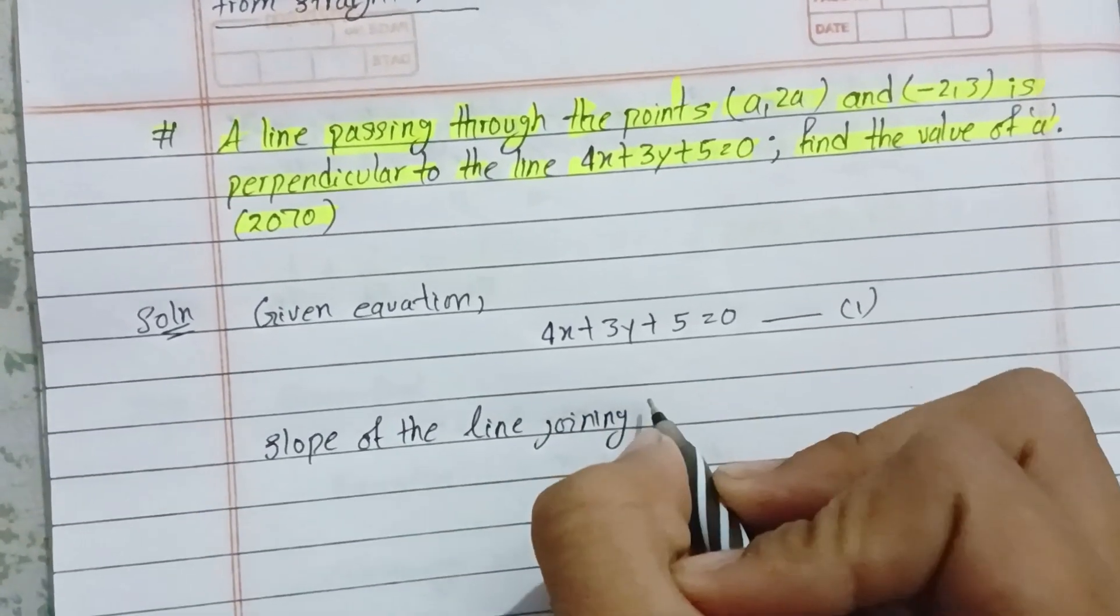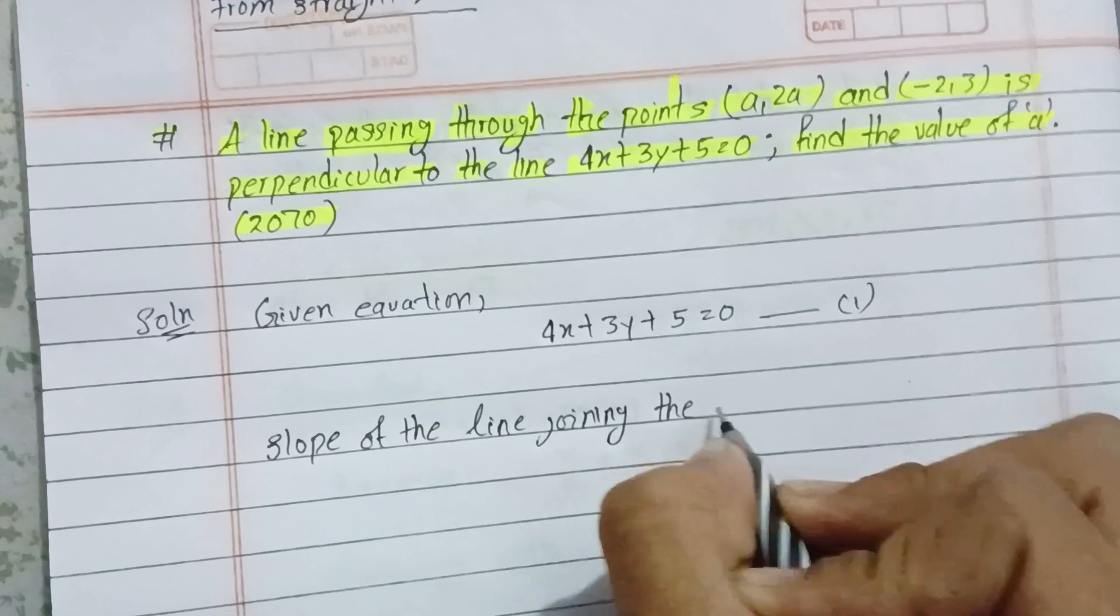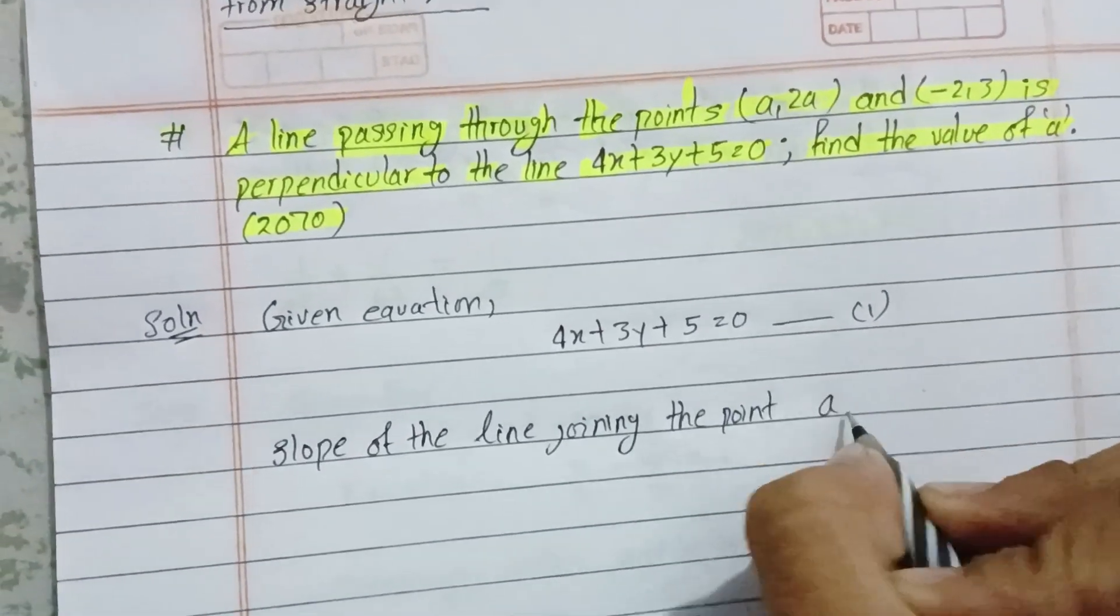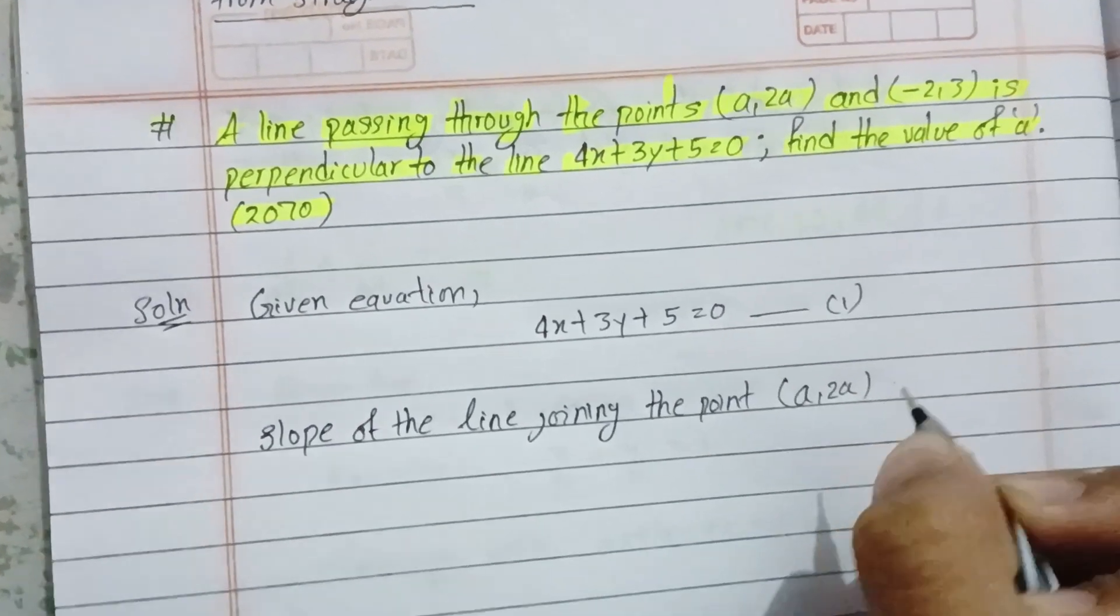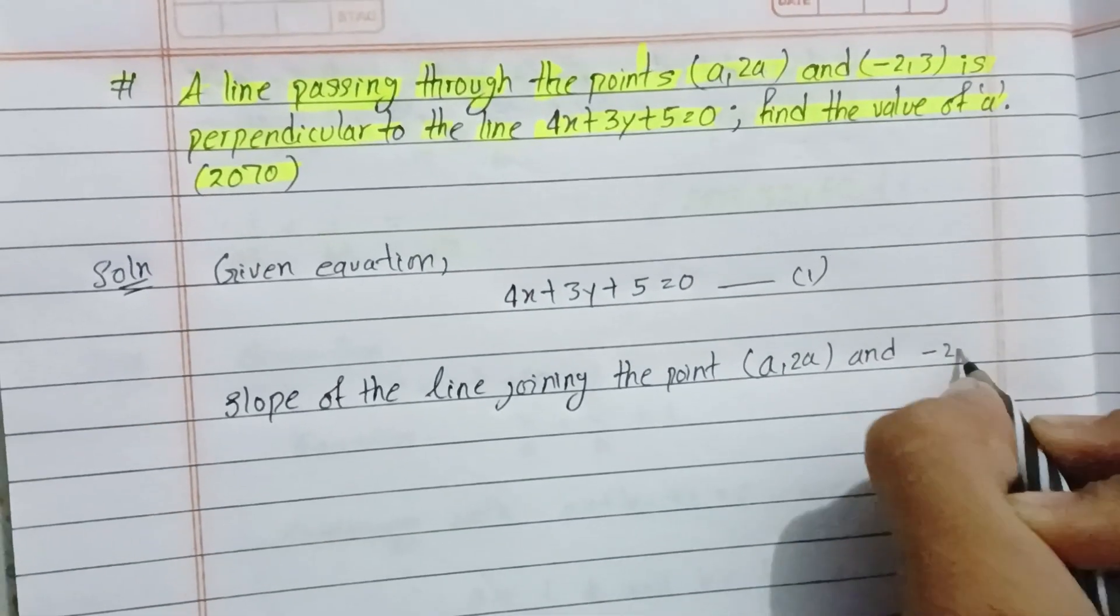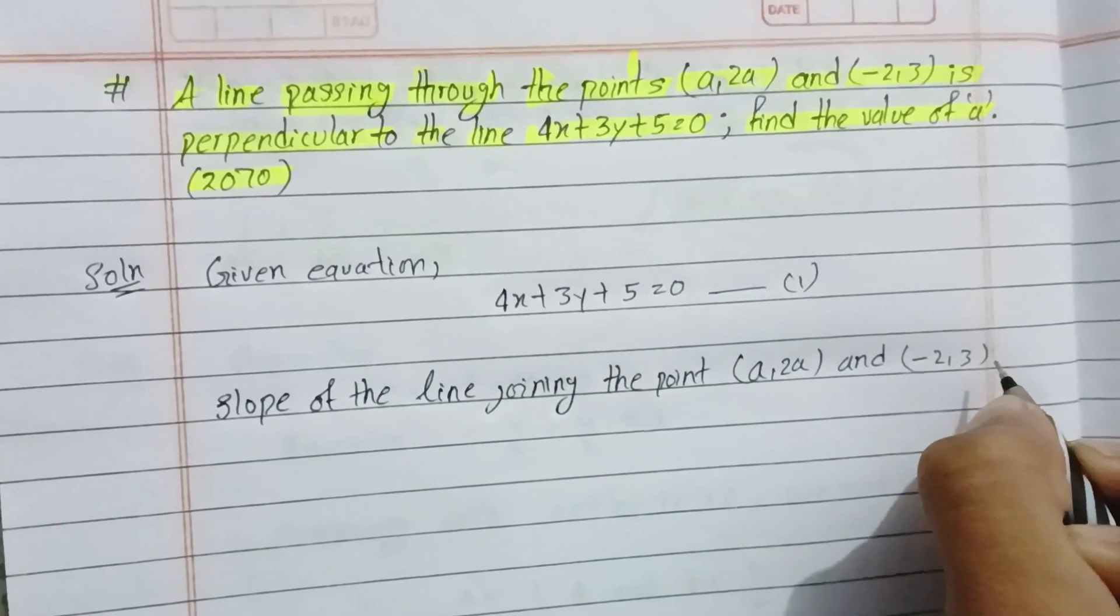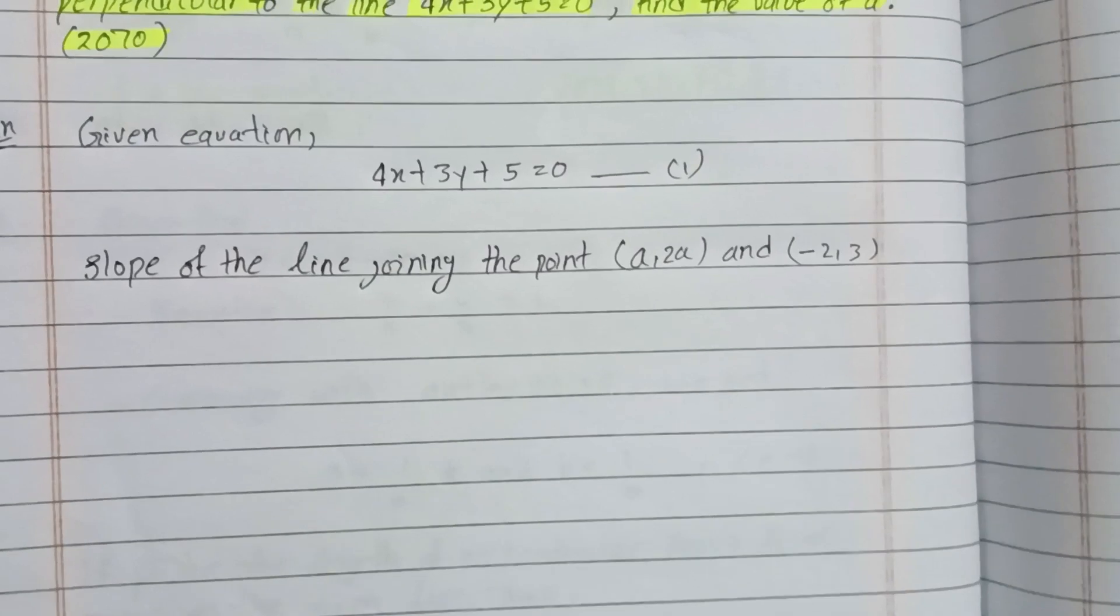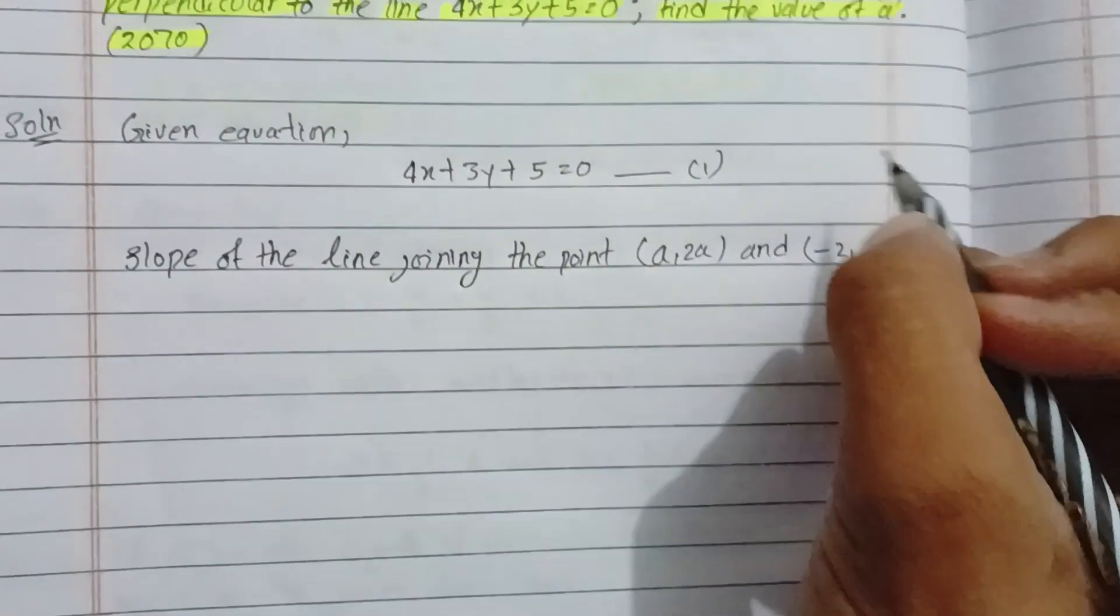The slope of the line joining the point (a, 2a) and (-2, 3). In coordinate geometry, we use the slope formula.